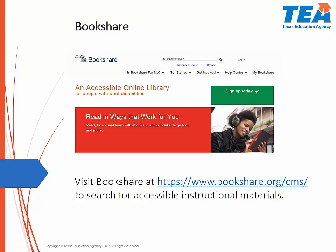Bookshare has over 450,000 titles using computer-generated speech and is free to any eligible student with a print disability. Members get unlimited access to textbooks, college prep and career titles, children's and young adult books, bestsellers, newspapers, and magazines. Students may also request a title to be added if it is not in the library.